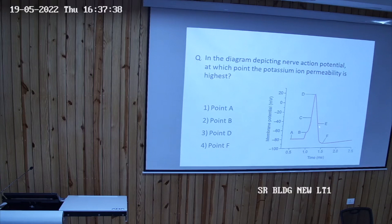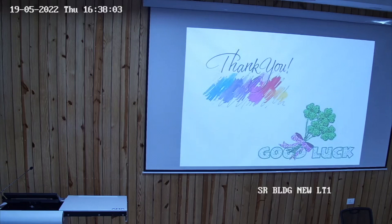And this F hyperpolarization. So in which do you think the potassium ion permeability is highest? It is the F. Answer is F. Hyperpolarization, potassium ions go outside more. Okay, so we'll finish.